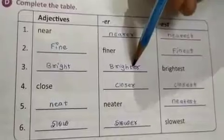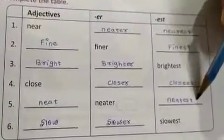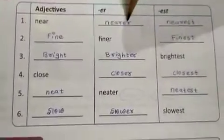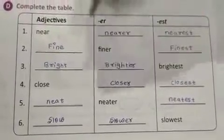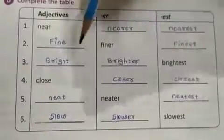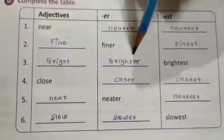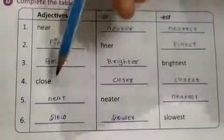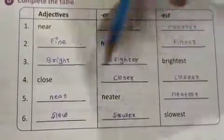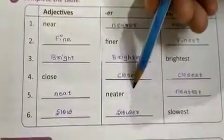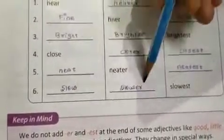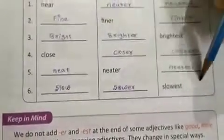Here you have to add ER. Here you have to add EST. Near, nearer, nearest. Fine, finer, finest. Bright, brighter, brightest. Close, closer, closest. Neat, neater, neatest. Slow, slower, slowest.